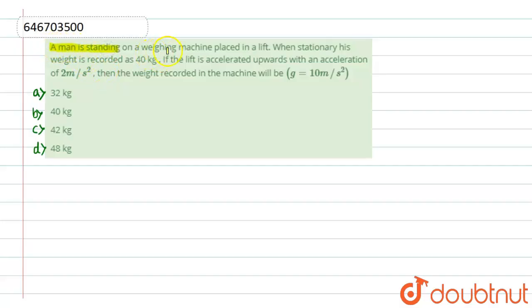a man is standing on a weighing machine placed in a lift. When stationary, his weight is recorded as 40 kg. Now if the lift is accelerated upward with an acceleration of 2 meters per second squared, then the